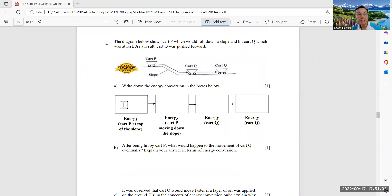Okay, this is quite straightforward. Energy, I'll cut P at the top. For simplicity, I'll just write the short form. It's gravitational potential, and then this is kinetic. Okay, cart energy here, so this is kinetic, and the other one is heat.